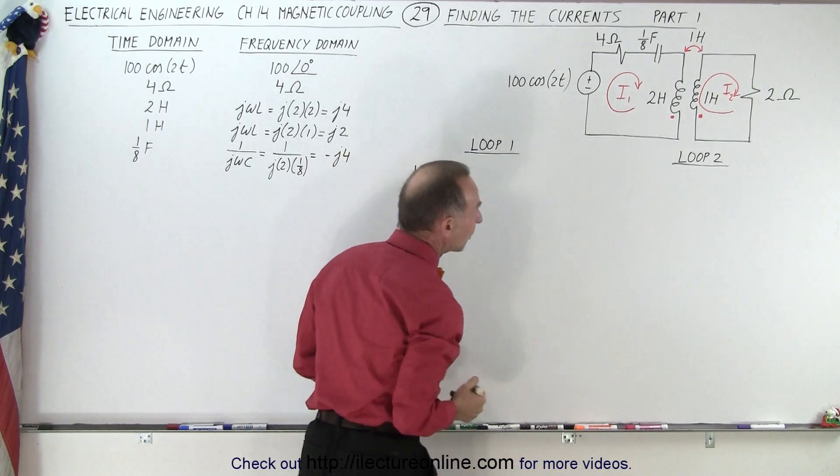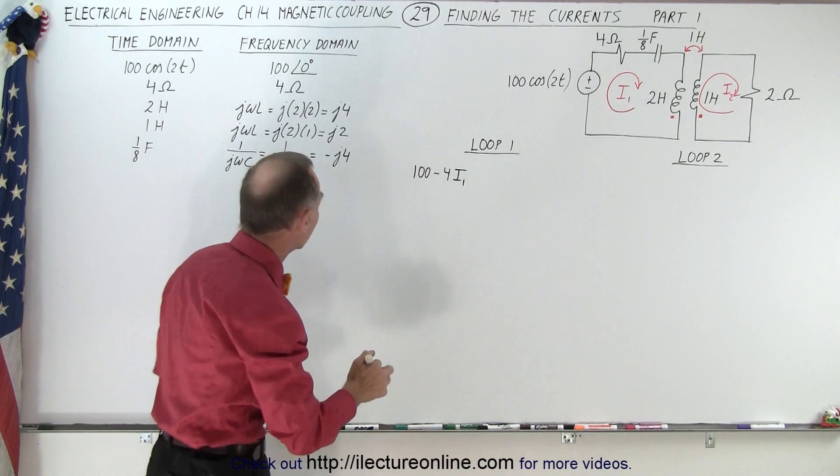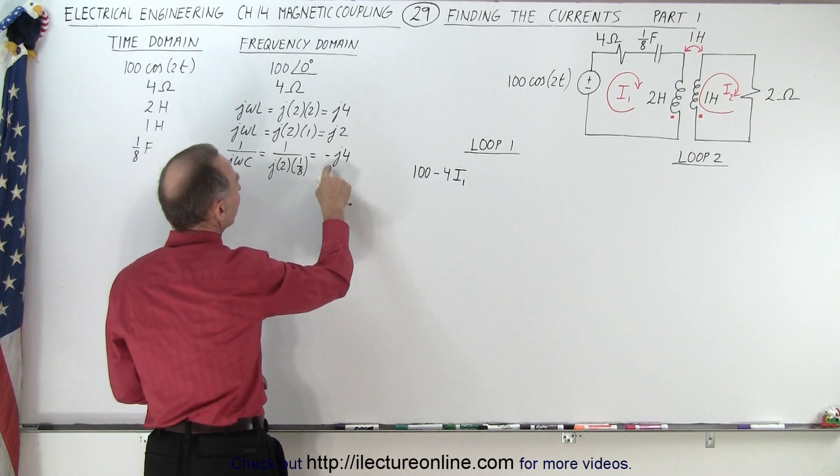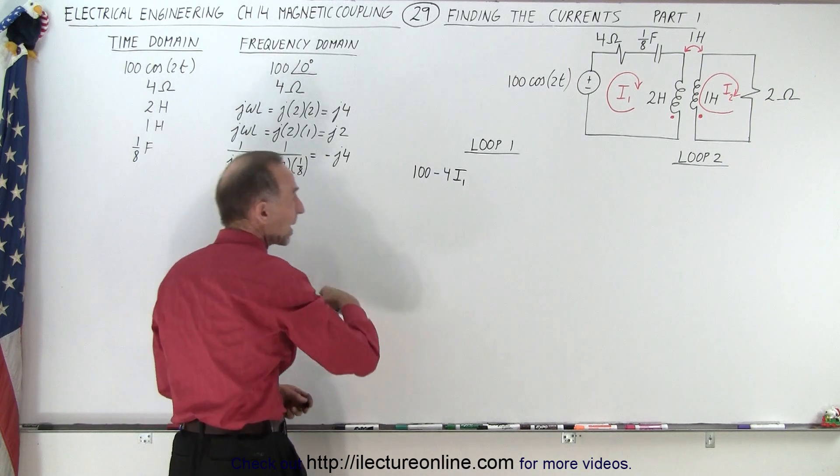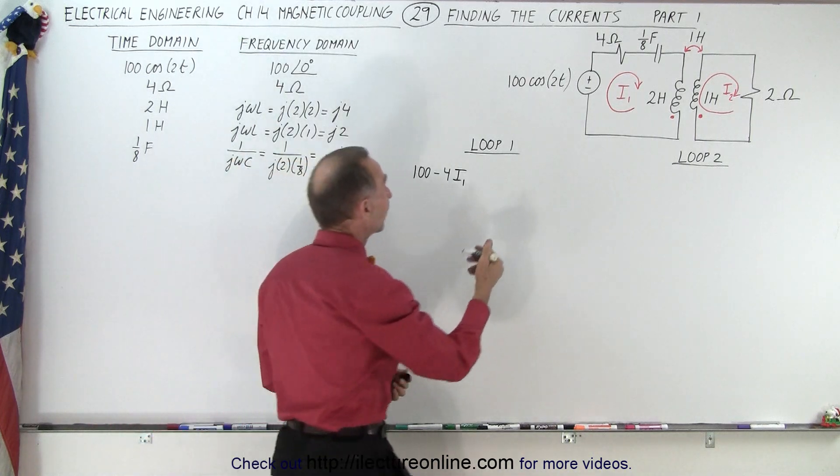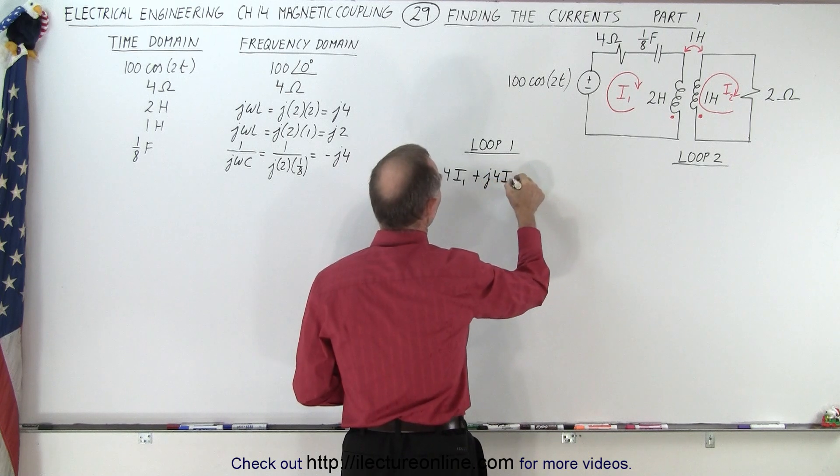Then we have a voltage drop across the capacitor. However, because of the phase difference of the capacitor, notice that for the capacitor, one eighth farad, that becomes a minus J4. So we're going to subtract a minus J4, which becomes of course a plus J4 times I1. So plus J4 times I1.